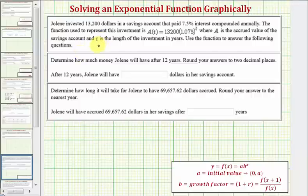Jolene invested $13,200 in a savings account that paid 7.5% interest compounded annually. The function used to represent this investment is A of t, where A is the accrued value of the account after t years, and we're asked to use our function to answer the following two questions.